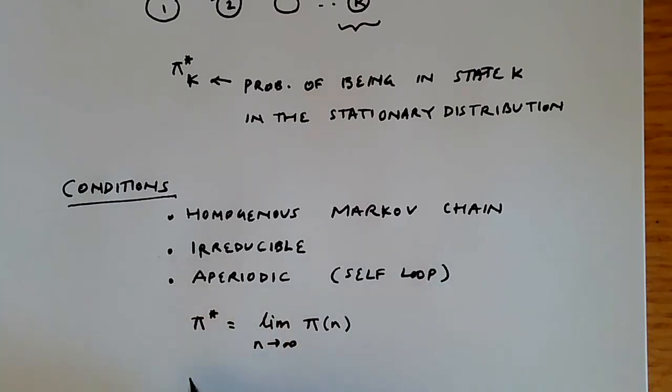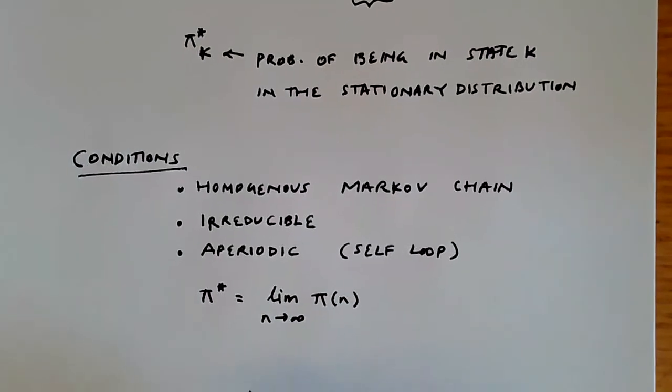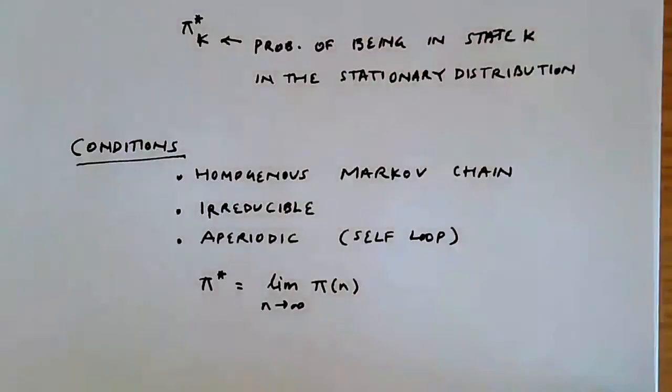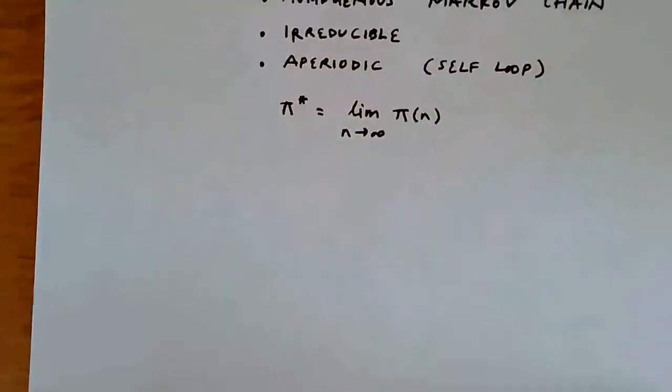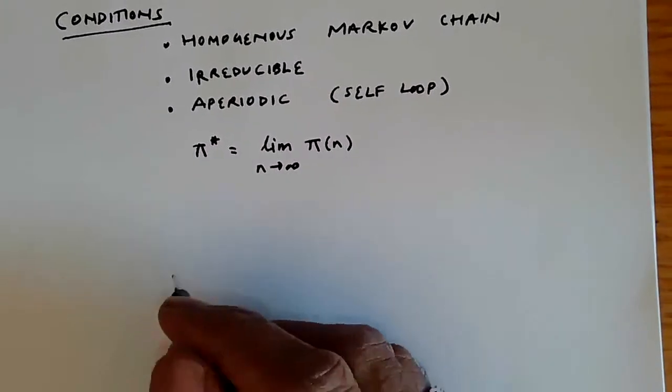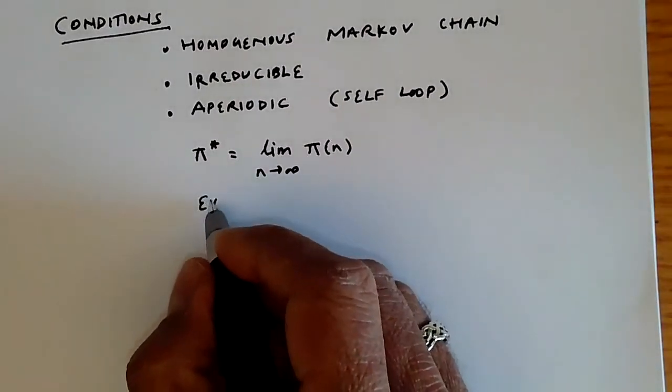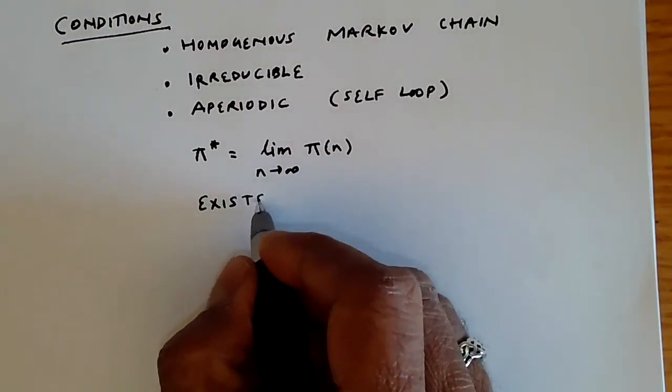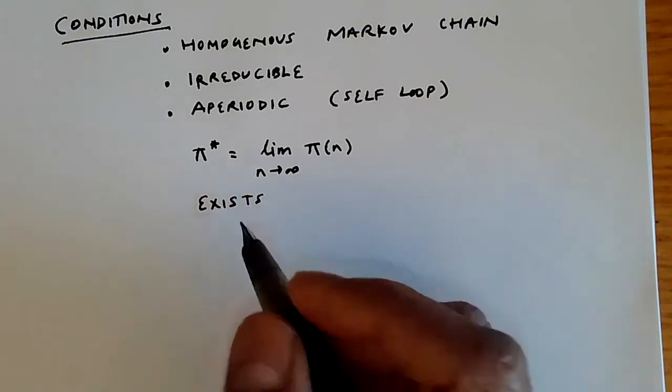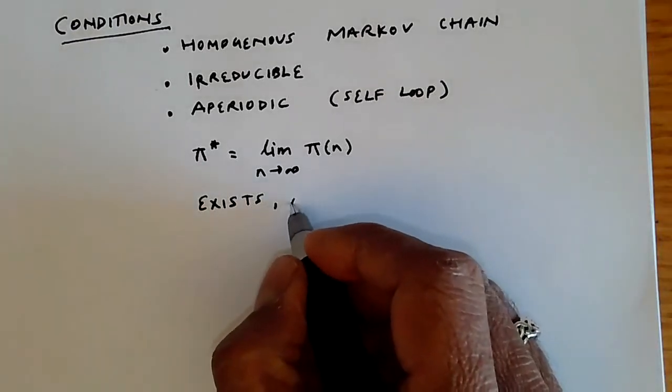And it's basically saying this is the stationary probability distribution pi star is what you get as you run the chain for a very long time, so n tends to infinity. And it's saying that this exists. Under these conditions, this limiting distribution exists, and it's independent of pi 0.